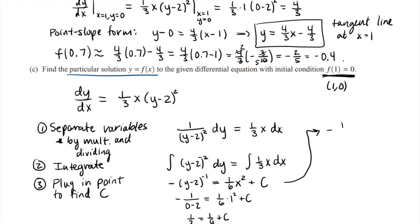So now taking this equation and plugging in my C value, I have 1/(y - 2) equals 1/6 x² plus 1/3. And now my final step, Step 4, is to solve for y—that's the equation that I want.